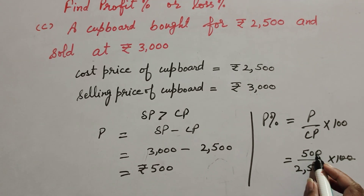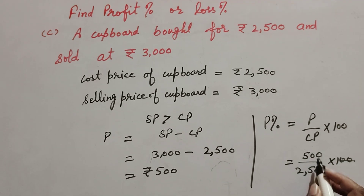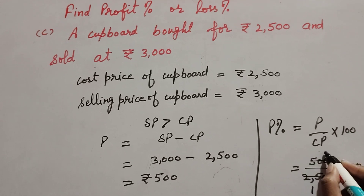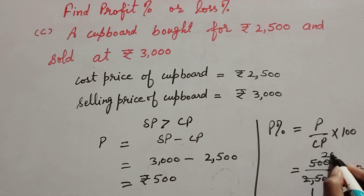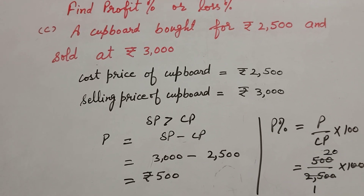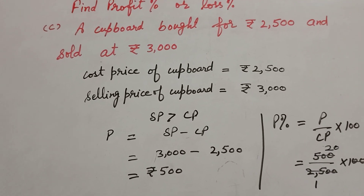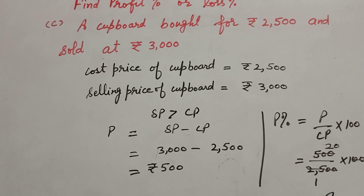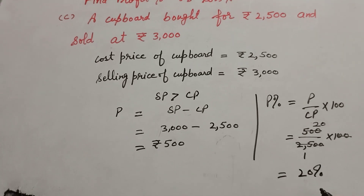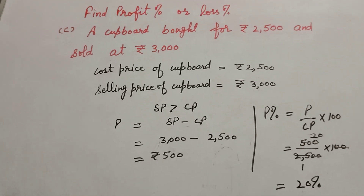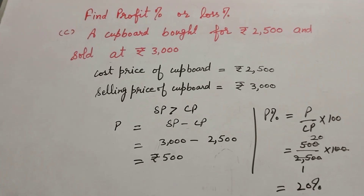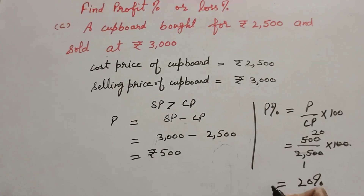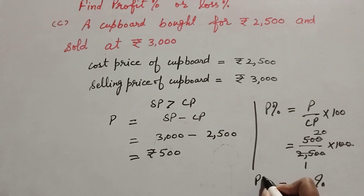500 divided by 25 — on the table of 25: 25 times 20 equals 500. So profit percent is equal to 20 percent. Thanks for watching, like, comment and share my video, and subscribe to my YouTube channel.